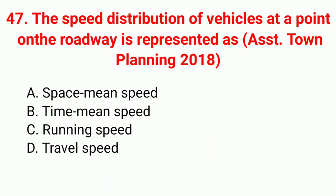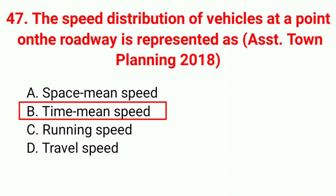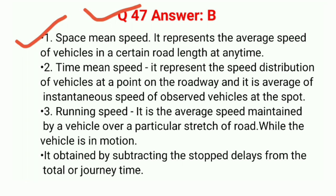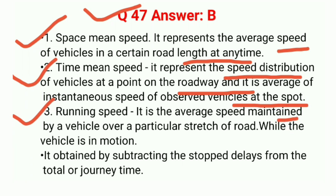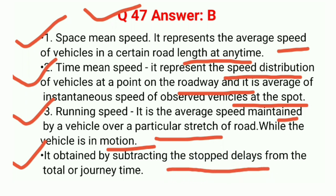Question 47: The speed distribution of vehicles at a point on the roadway is represented as — correct answer B: time mean speed. Space mean speed represents the average speed of vehicles over a certain road length at any time. Time mean speed represents the speed distribution of vehicles at a point on the roadway and is the average of instantaneous speeds of observed vehicles at that spot. Running speed is the average speed maintained over a stretch while the vehicle is in motion.